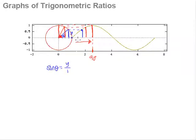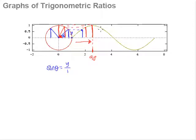What goes on after 90 degrees? As theta increases to become obtuse — more than 90 degrees — the y value, meaning the vertical height, is reduced. It's less than 1. This vertical height, if you draw a horizontal line across, you start to realize that this is the same y value.